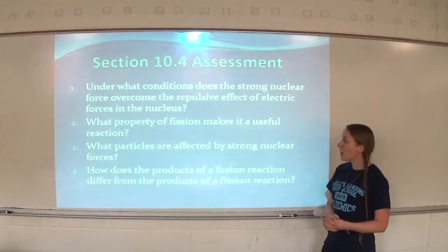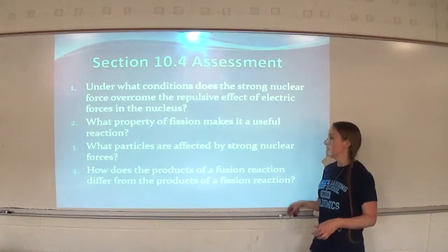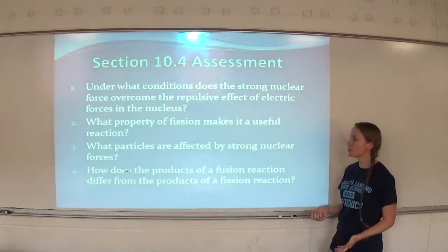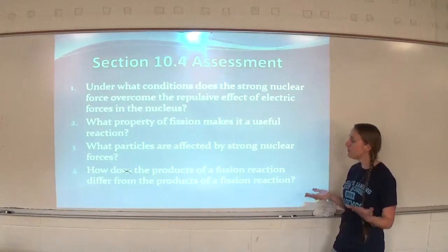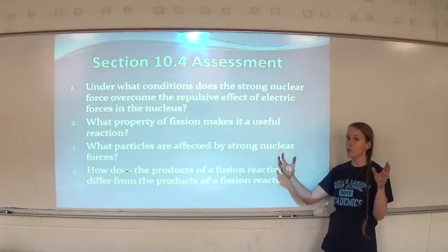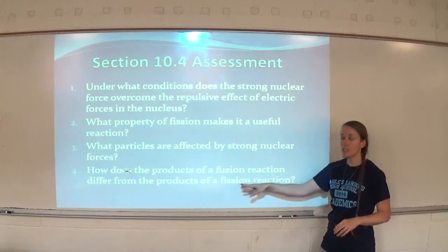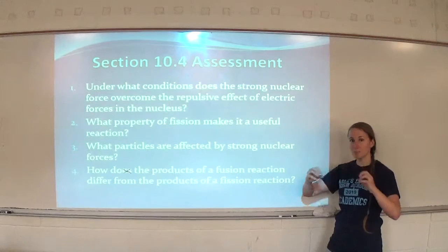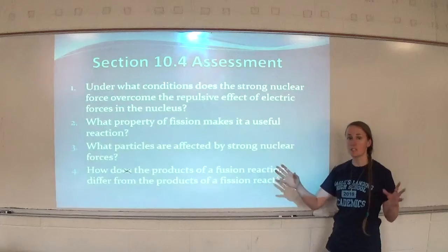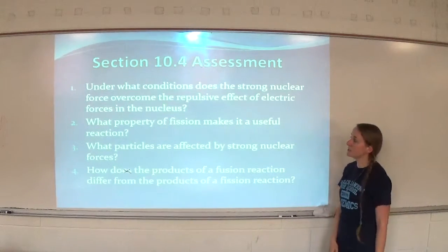Question four: How do the products of a fusion reaction differ from the products of a fission reaction? Fusion is two small nuclei combining to form a larger nucleus. Fission is a large nucleus splitting into smaller nuclei. So fusion is small to big, and fission is big to small — that's the easiest way to say it.